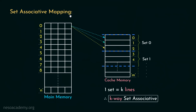For the set associative mapping technique, the physical address bit split has a set number portion from which we can determine the particular set where the main memory block will be mapped onto. So we need not search the entire cache to find the needed block — we only have to look for the block in the set of lines where it is supposed to reside. Therefore, retrieval becomes easier. Also, since all sets are of equal size, we only need k number of comparators for k-way set associative mapping.